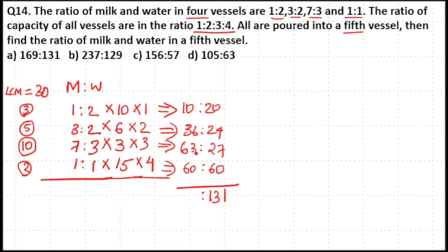Now adding the water amounts: 20 plus 24 plus 27 plus 60 equals 131. So 169 to 131. Option A is your answer.